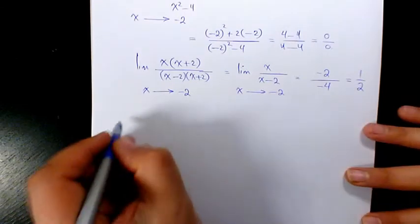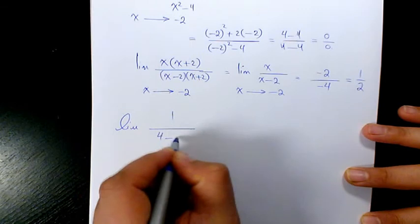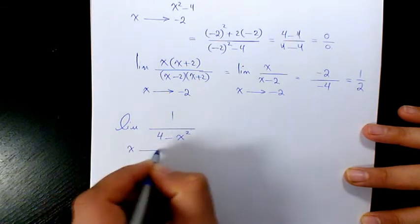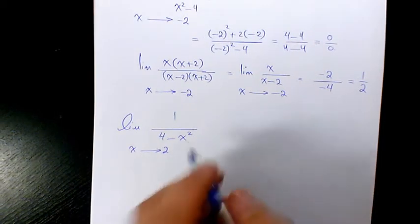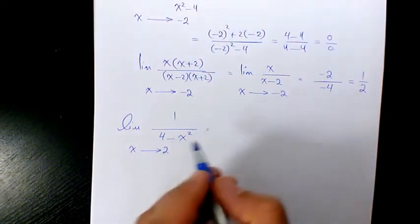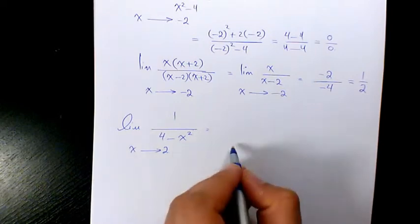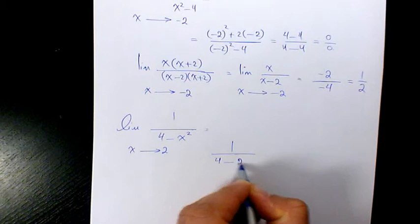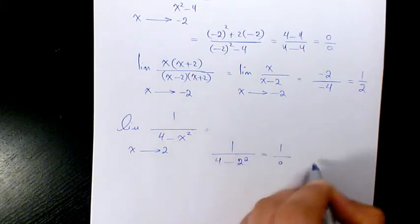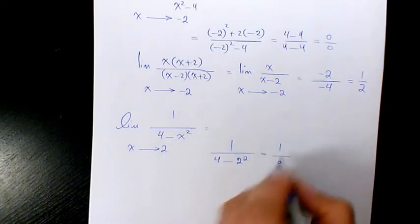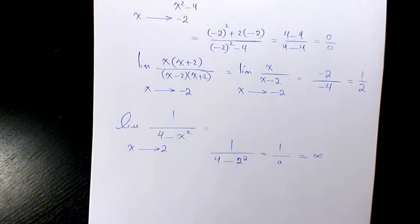Next example: the limit of 1 over (4 minus x squared) when x is approaching 2. We have 1 over (4 minus 4), which is 1 over 0. Since it's 1 over 0, it's going to go to infinity.